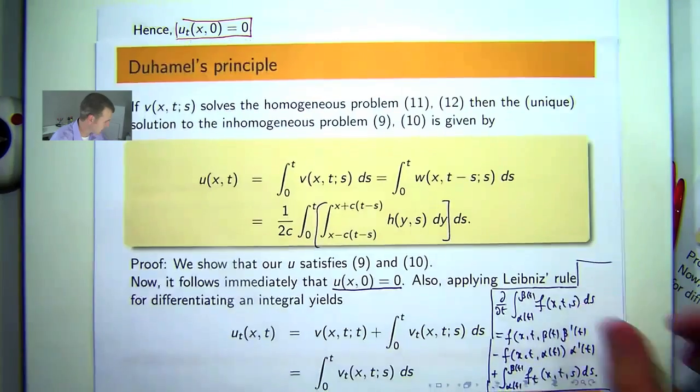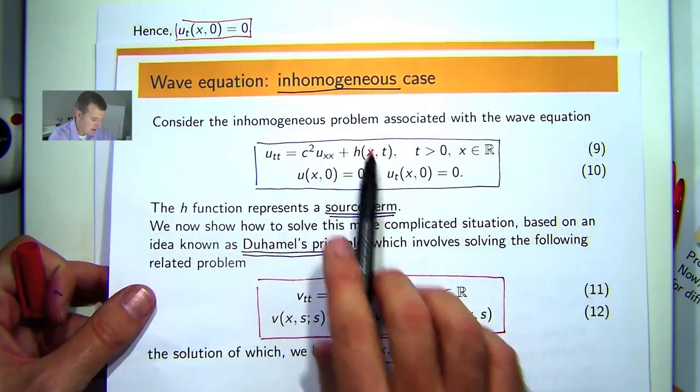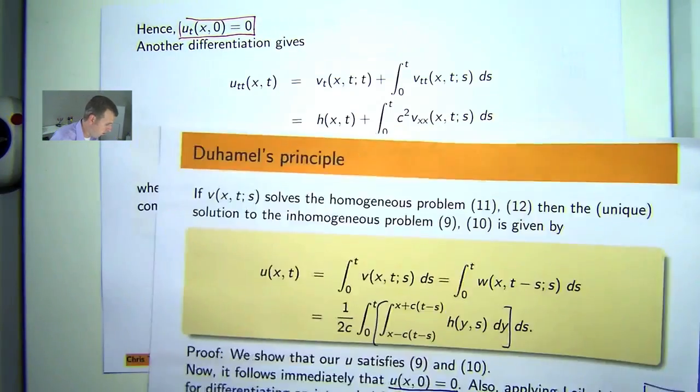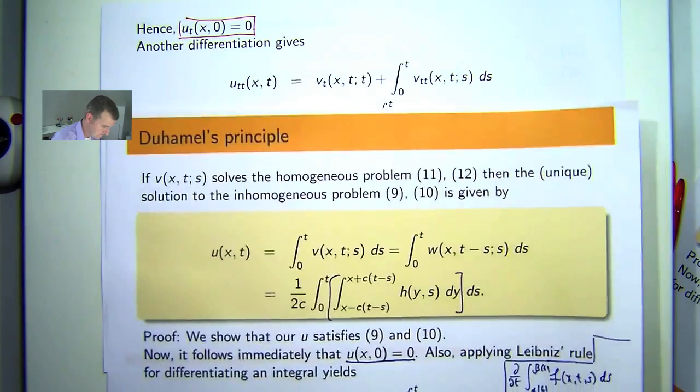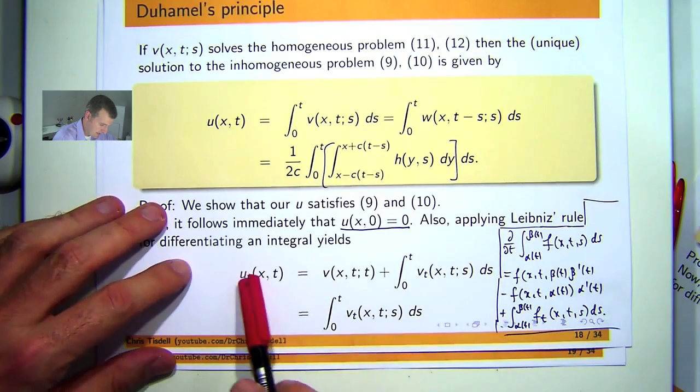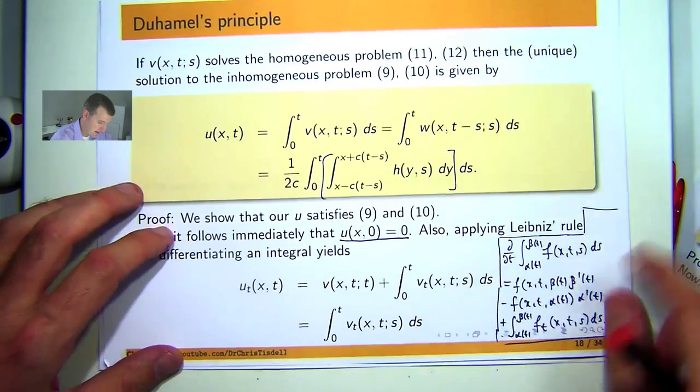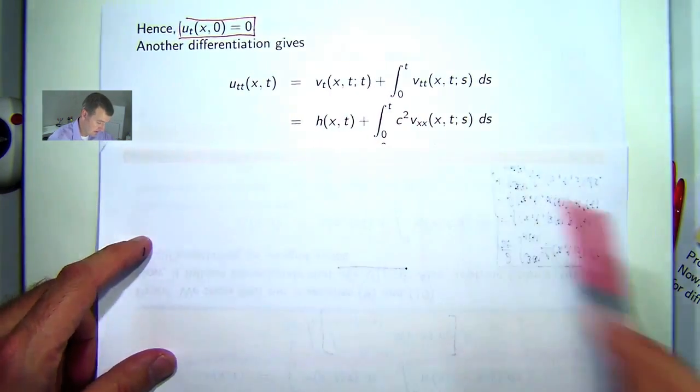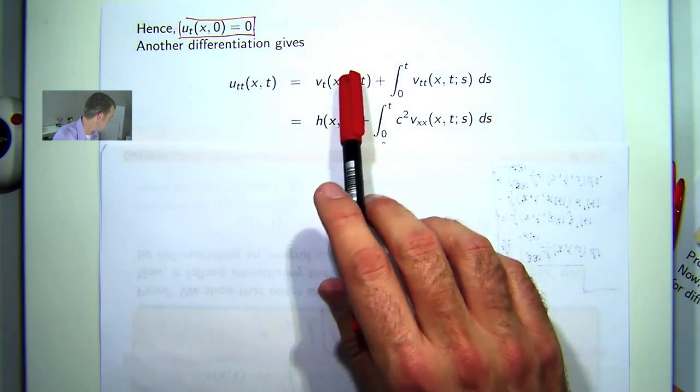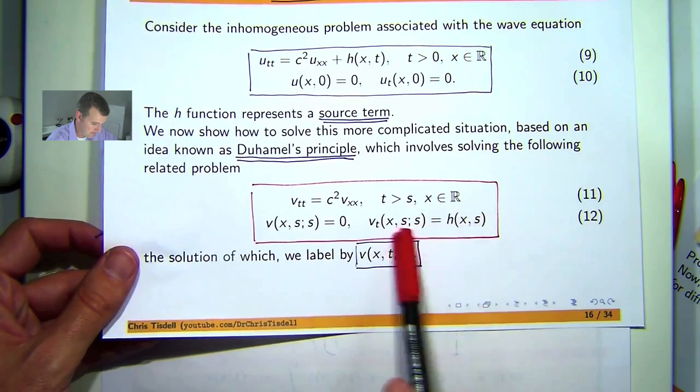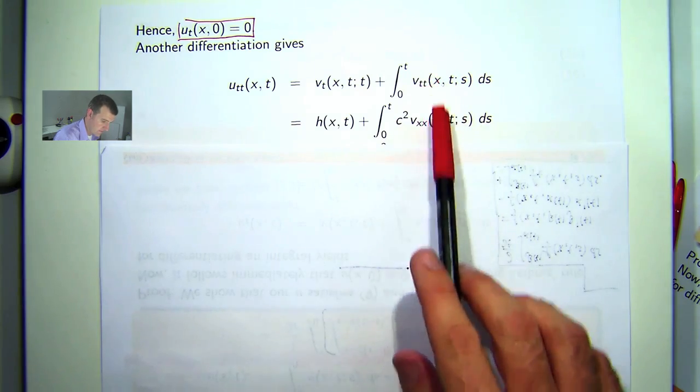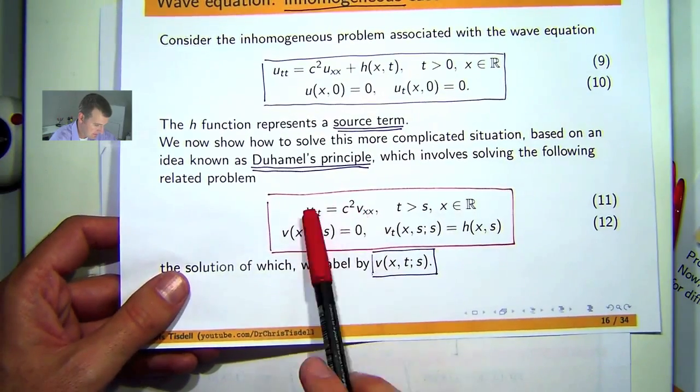So the last thing we want to do is actually prove that this form really does satisfy the inhomogeneous wave equation. So I need to compute another derivative. So take the partial derivative of both sides with respect to t and apply Leibniz rule again. And you'll get a very similar setup as the previous page. Now this is just the following with s replaced by t. So I get that plus this. Now, from here to here, I've invoked 11. Because v is a solution to 11, 12. So from there to there.